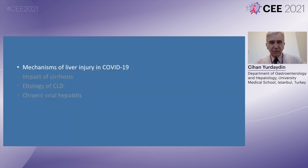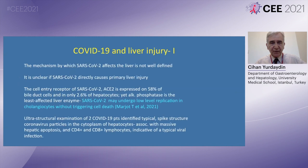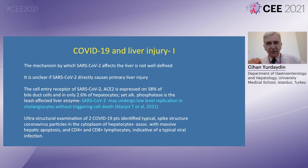What are the mechanisms of liver injury in COVID-19? It makes sense to think that SARS-CoV-2 infection would affect the liver directly, but the mechanism by which SARS-CoV-2 affects the liver is not well defined. It is actually controversial whether SARS-CoV-2 directly causes primary liver injury, but there is some evidence, as I will point out on this slide.